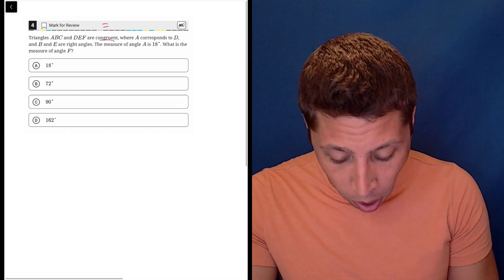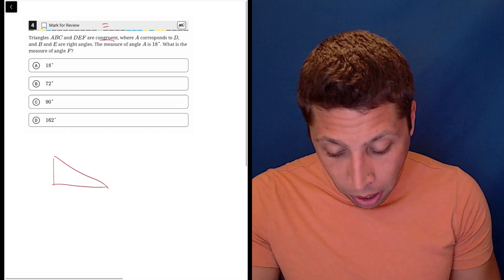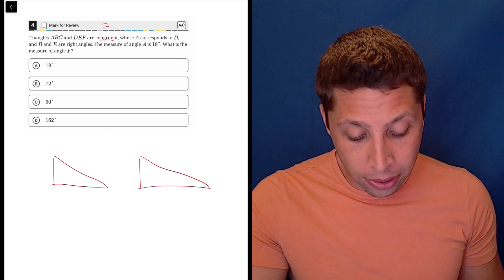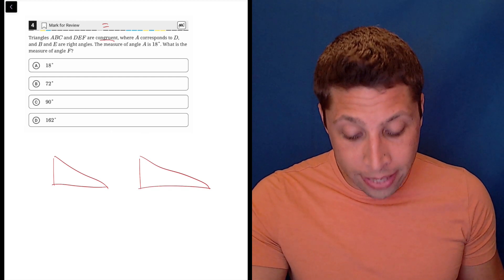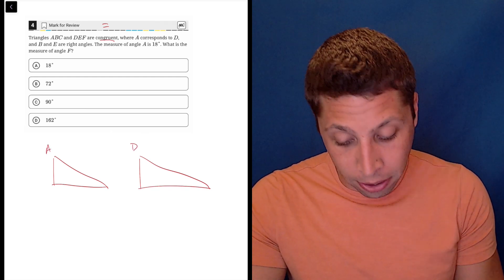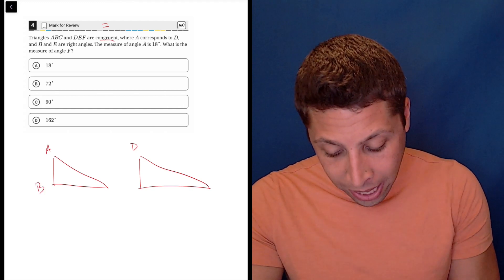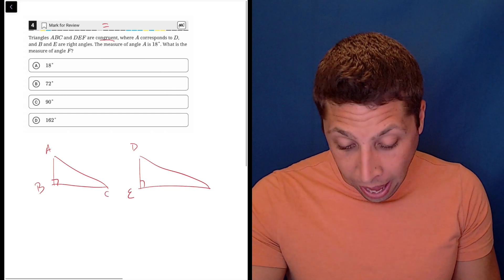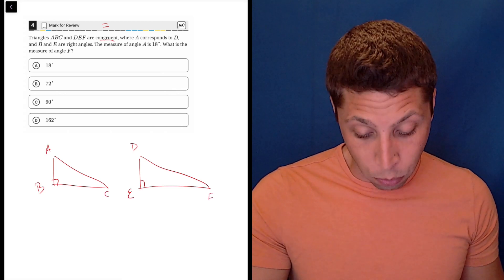So we could draw these if we want. We can draw two triangles. We have to make sure we follow the instructions in the question, but they're pretty clear. A corresponds to D, so I'll put A and D here. They say B and E are right angles, so we've got to make sure that those go down there. And then what's the leftover letter? C and F. So those are going to correspond as well.